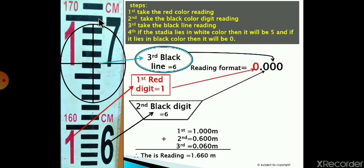Here you can see there are some steps to take a reading. The first step is take the red color reading. Suppose this is our standard stadia. When you look through a telescope of a dumpy level or theodolite, you will see this kind of design.